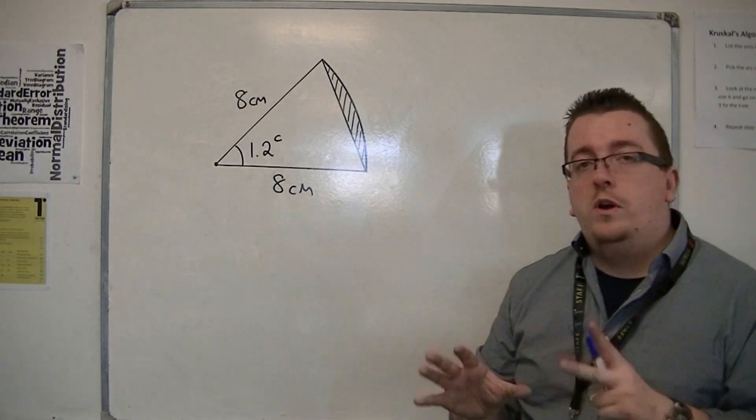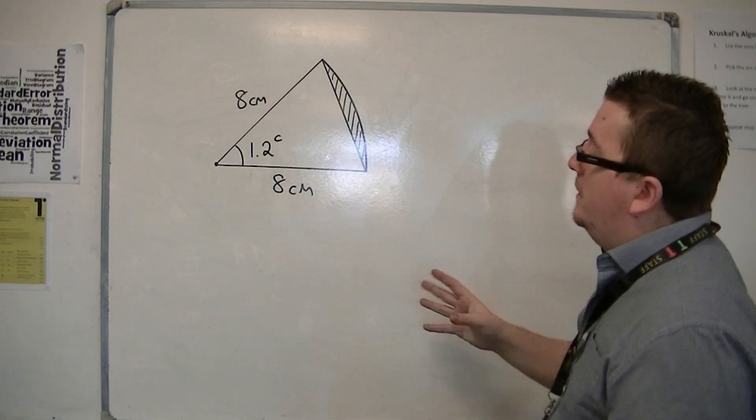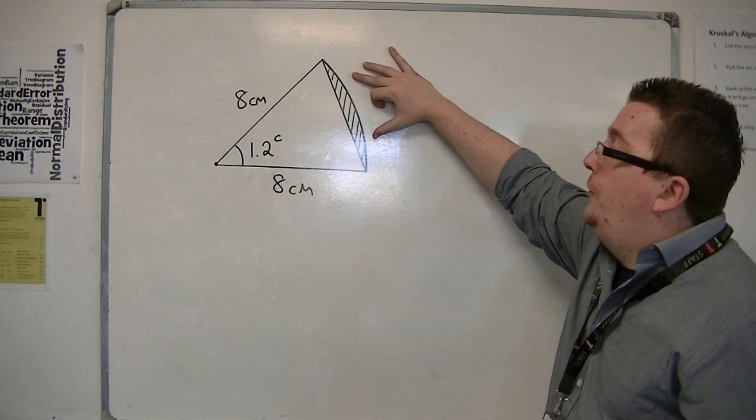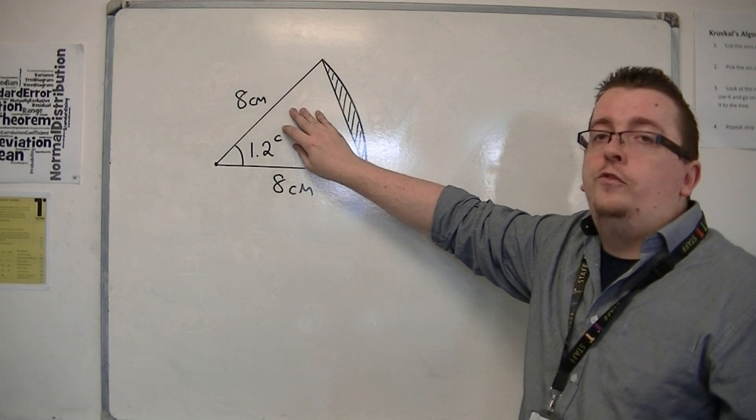So if I want to work out the area of the shaded segment, then I need to find the area of the sector and subtract the area of the triangle.